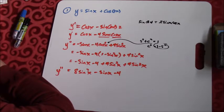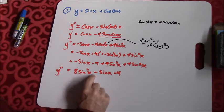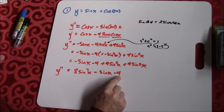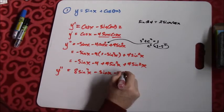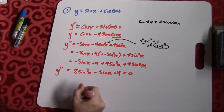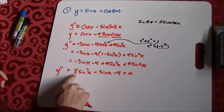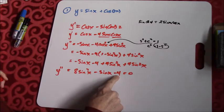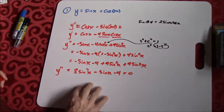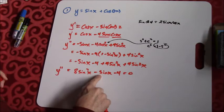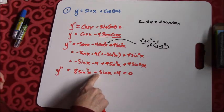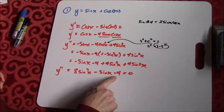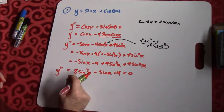To find the point of inflection, I need to set that equal to zero and solve. Does it factor? If I do 8 times 4, that's 32 — are there two numbers that multiply to 32 and add or subtract to get negative one? I don't think so. So to solve this, we have to go to the quadratic formula. This just got ugly.